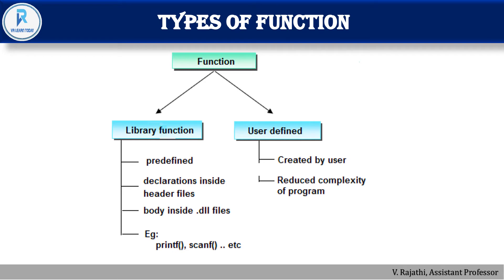There are two types of functions: library functions and user-defined functions. Library functions are predefined functions — they are already available, like printf and scanf. These are declared inside the header file and their body is in a .dll file. Printf is used for printing and scanf for getting input from the user. User-defined functions are created by the programmer to reduce complexity of the program.